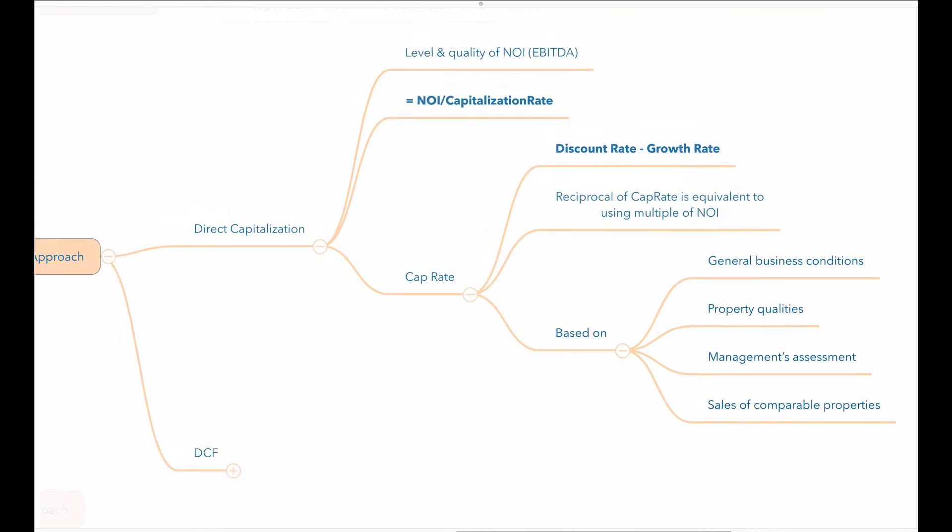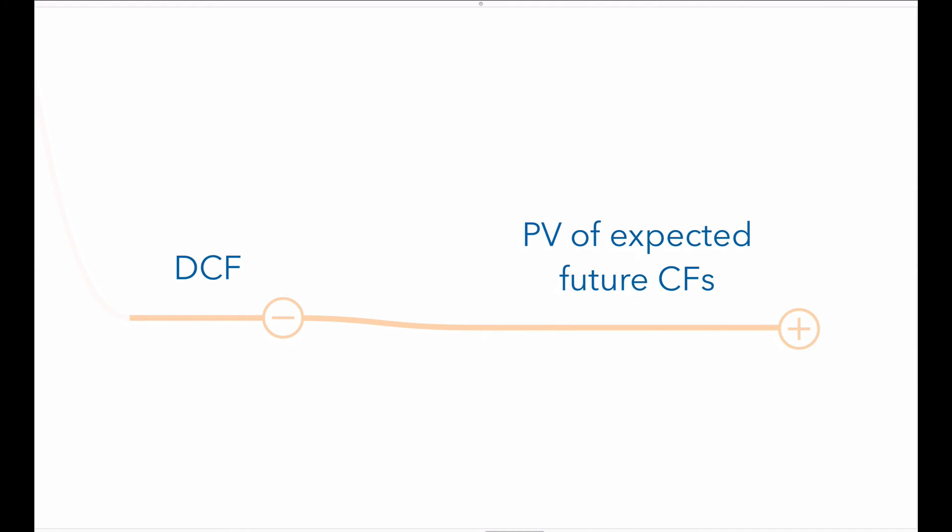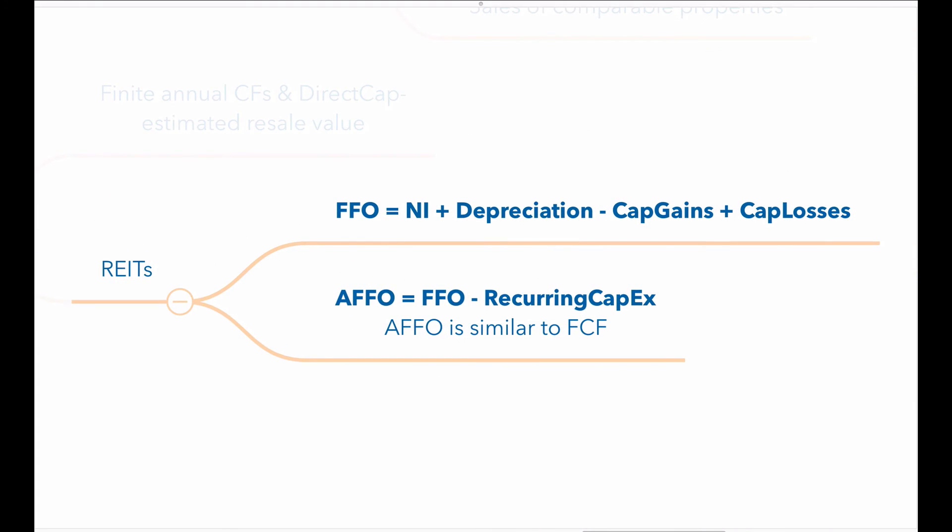The discounted cash flow approach discounts future projected cash flows to arrive at a present value of the property. You use a finite number of annual cash flows and the direct capitalization method to estimate a terminal resale value in arriving at the present value of future cash flows.